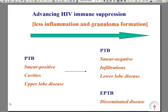The pattern of tuberculosis shifts from the typical smear-positive, cavitatory, upper-lobe pulmonary disease to an atypical smear-negative, infiltrative, lower-lobe pulmonary disease and extra-pulmonary disseminated disease.